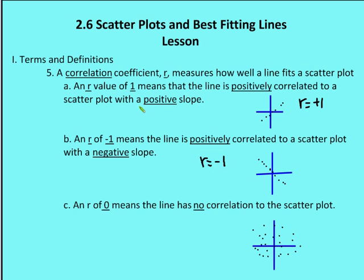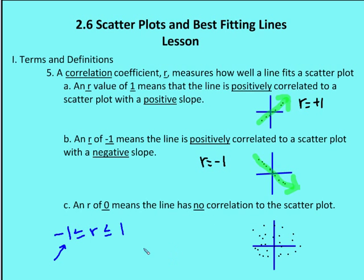Scientists and mathematicians developed something called a correlation coefficient, and that correlation coefficient is usually denoted by the small lowercase letter r. It defines how well the scatter plot fits a straight line. If the scatter plot is pretty much right on a positive line, we'll see an r value of one. If the scatter plot fits a negative line, your r value is going to be negative one. Where you have really no correlation, your r value is going to be zero. So your r value can be anywhere between negative one and one, where negative one means there is a strong negative correlation — as X moves to the right, Y goes down — and positive one means there's a strong positive correlation. An r value of zero means there's really no correlation.